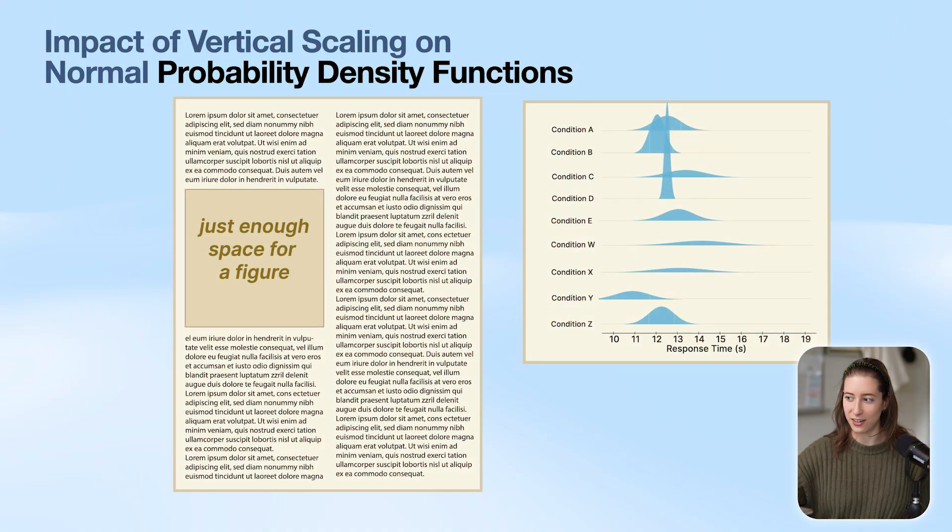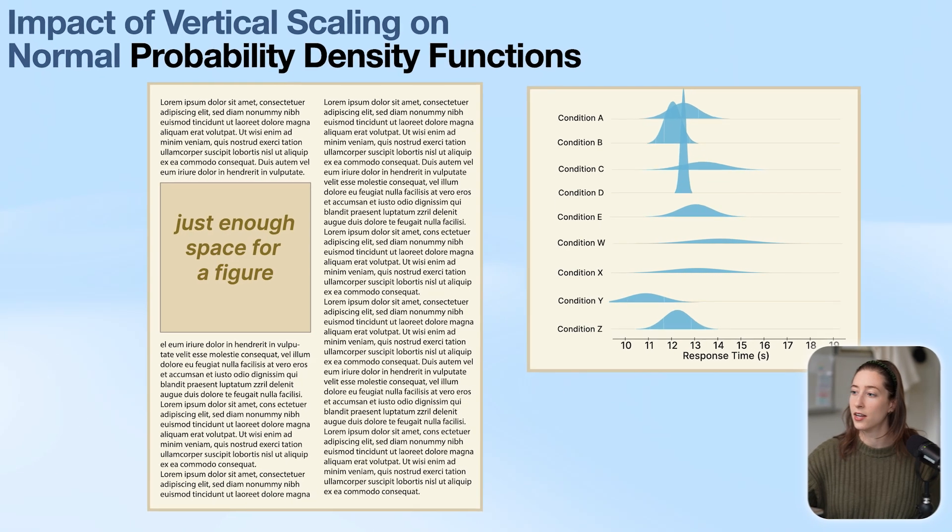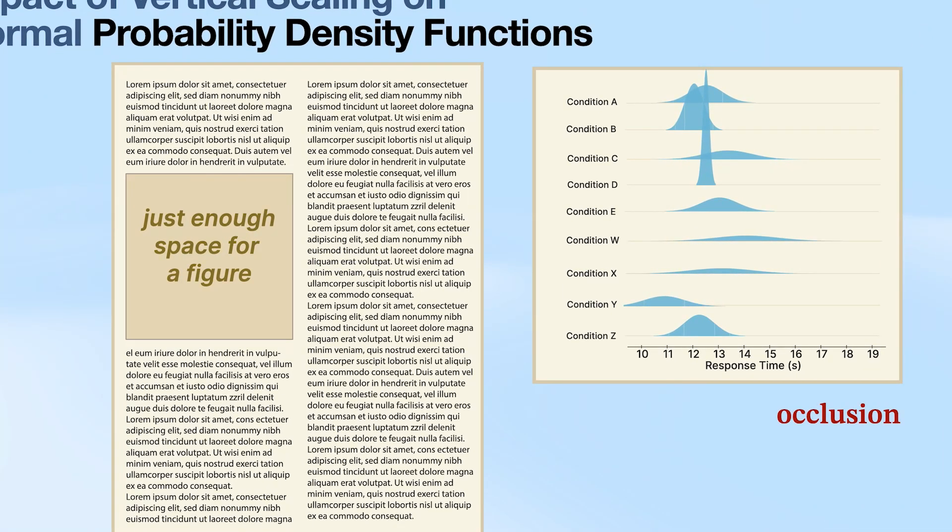Let's say now that you are a researcher and you're interested in putting together a figure to communicate your results. This figure here is an example of what might come out of a statistics visualization software. It's a bunch of PDF plots and they all kind of overlap, but they're all scaled to take up the same amount of area. Now this is correct, but there's some occlusion going on. We have overlap and it looks kind of messy.